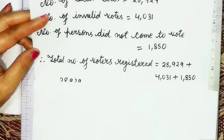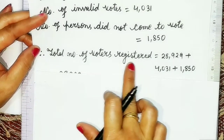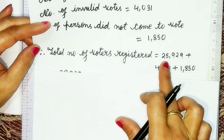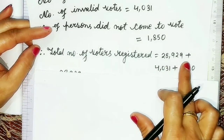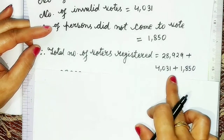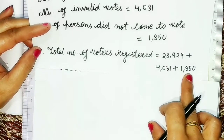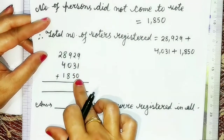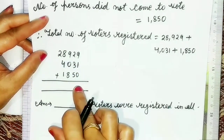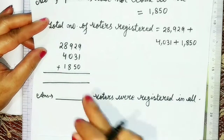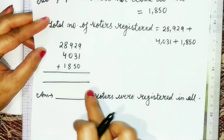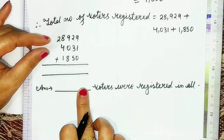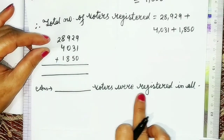So now we have to find the total number of voters registered. For that, we will add all three terms: 28,929 plus 4,031 plus 1,850. You will write the addition here, and whatever answer comes, write the same number in the blank space. Then write: voters were registered in all.